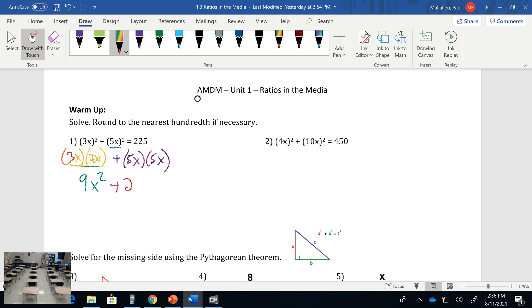Equals 225. These are like terms, so anytime you have like terms you can box them or circle them. That leaves us with 34x² equals 225.